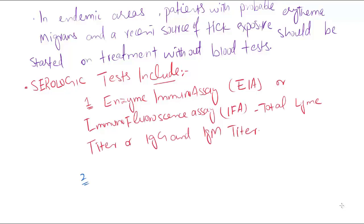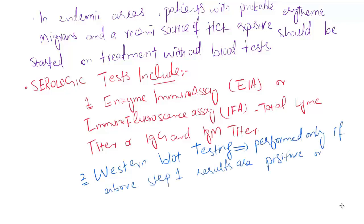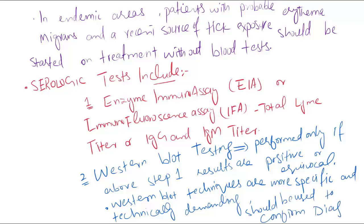In step 2, Western blot testing is performed. Western blot testing is performed only if step 1 test results are positive or equivocal. Western blot techniques are both specific and technically demanding and should be used to confirm diagnosis.